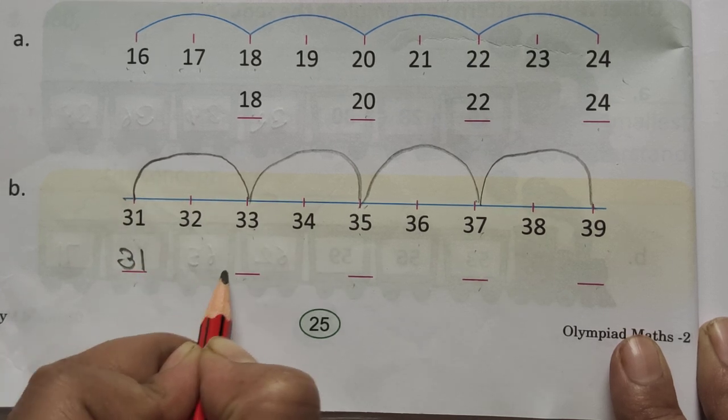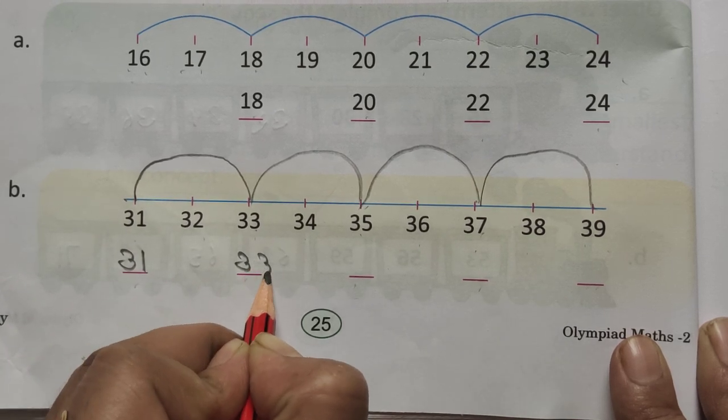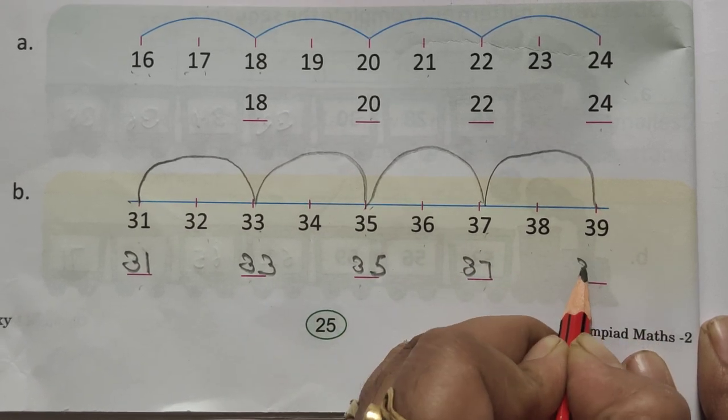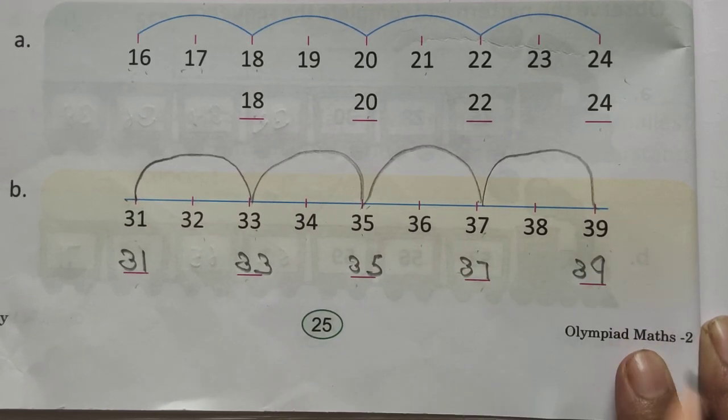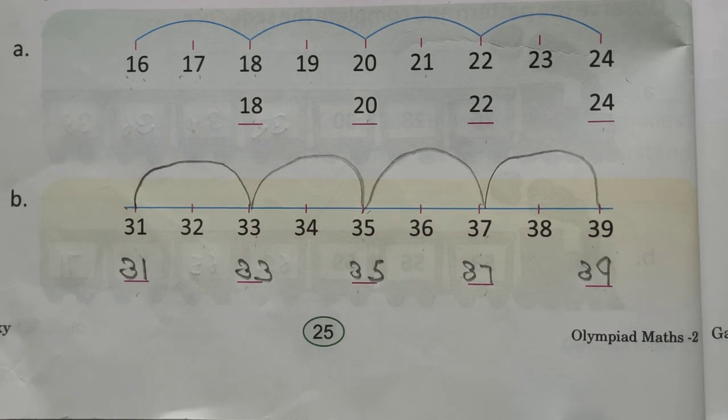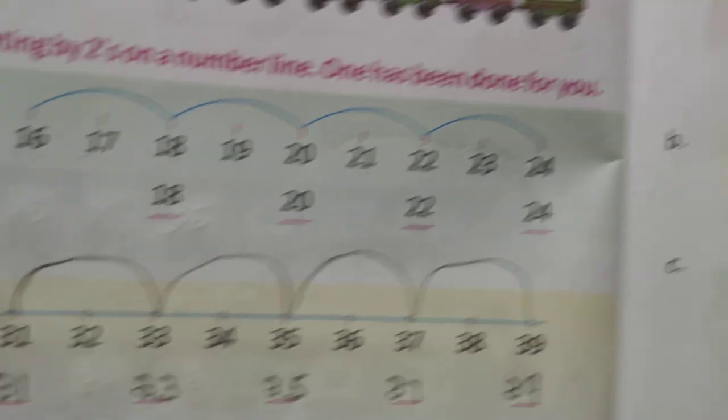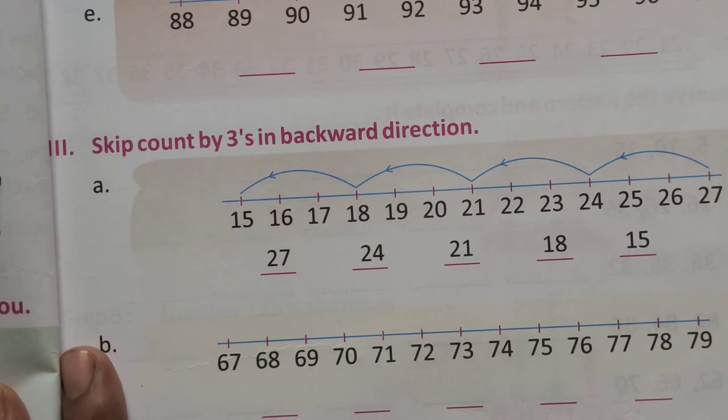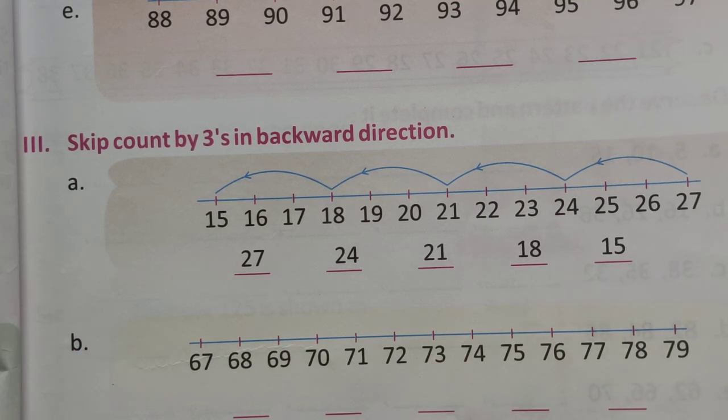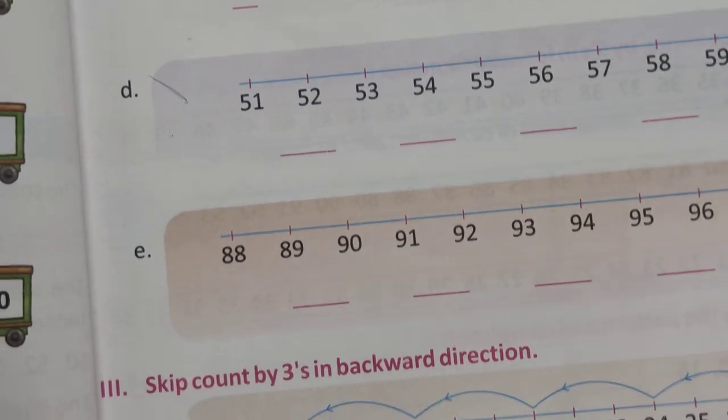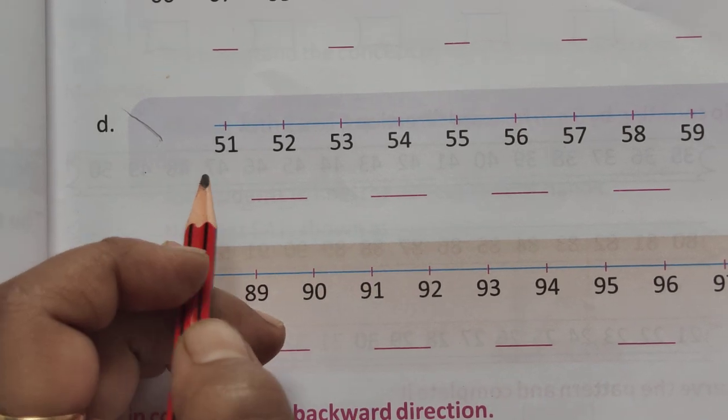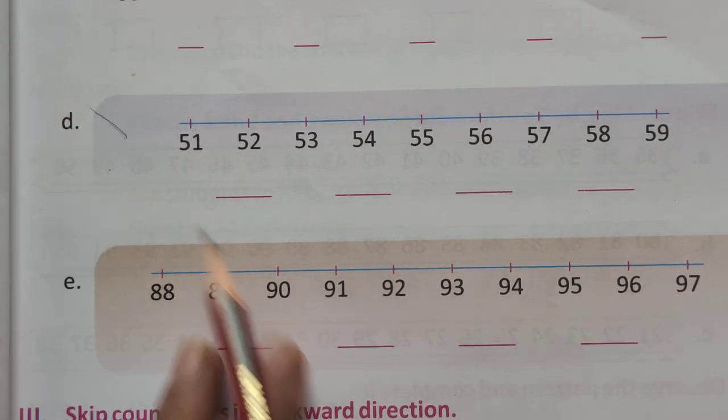So, right now, 31, 33, 35, 37, and 39. Is that clear? All of you? Any problem? The next one is, Skip counting by, Let's start.